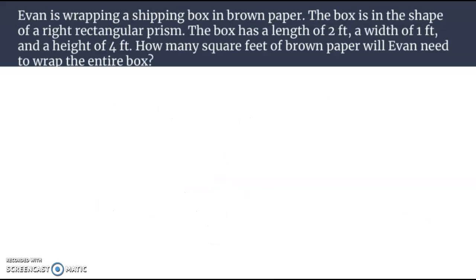Let's look at another one here. Evan is wrapping a shipping box in brown paper. The box is in the shape of a right rectangular prism. The box has a length of two, width of one, height of four. So we're going to just find the surface area.